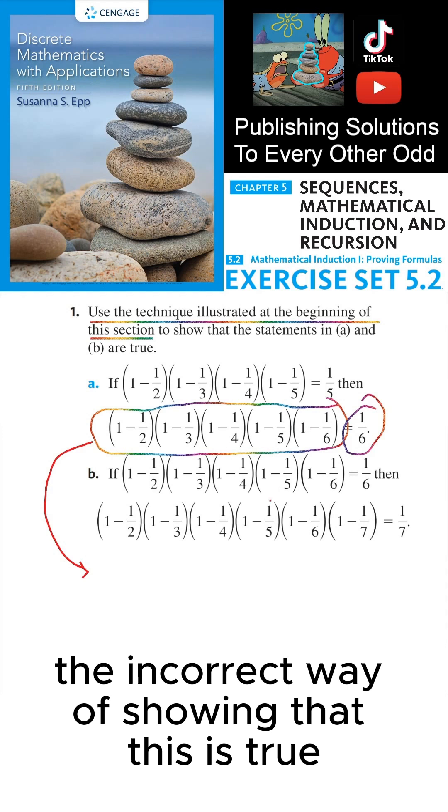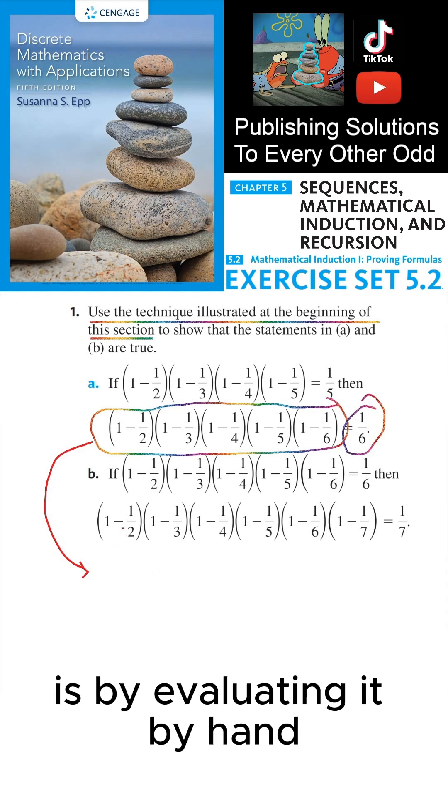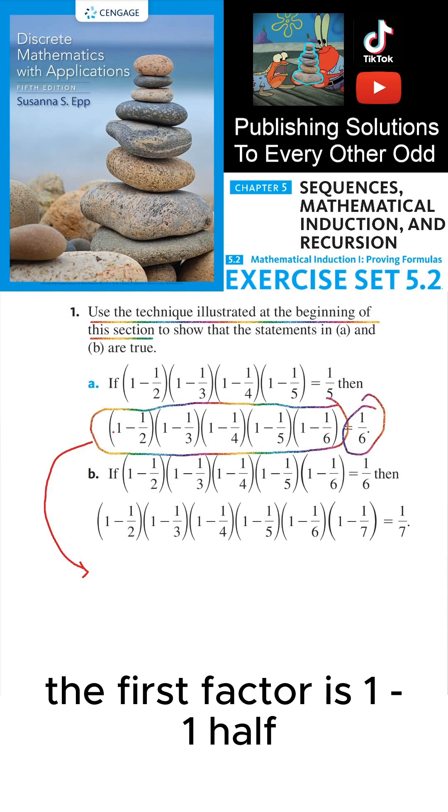The incorrect way of showing that this is true is by evaluating it by hand. For example, the first factor is 1 minus 1/2, which is 1/2.